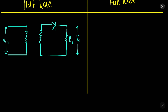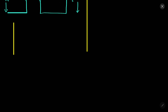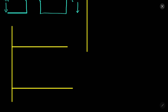Let us first understand the half-wave rectifier, then we will move on to the full-wave rectifier. The input will look like this — alternating current, so it will be a sinusoidal wave.